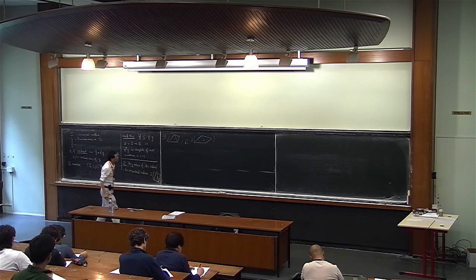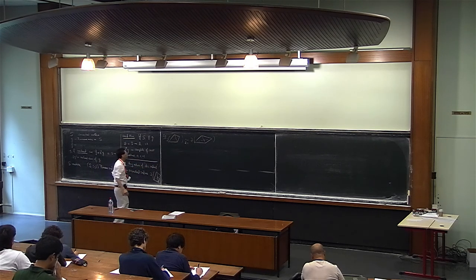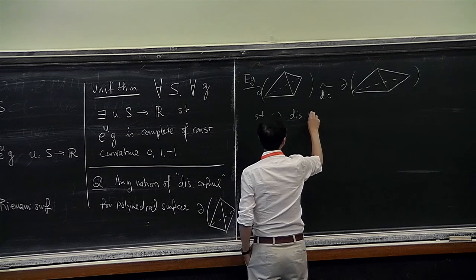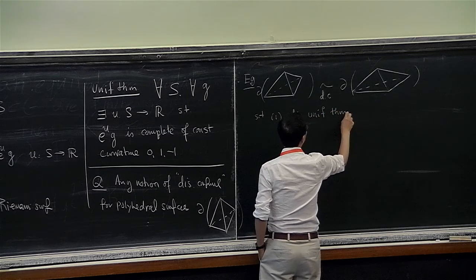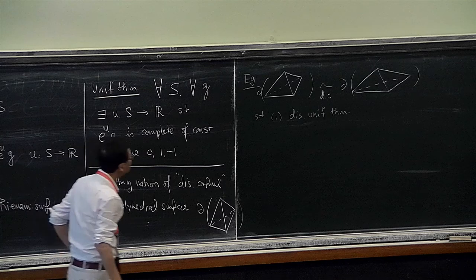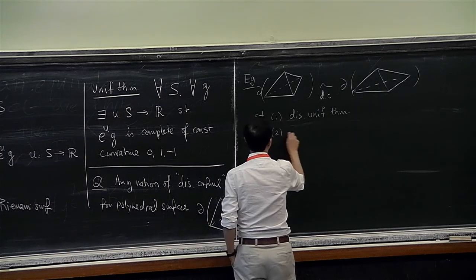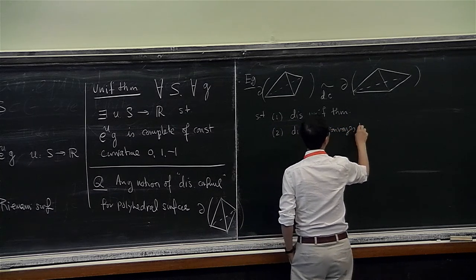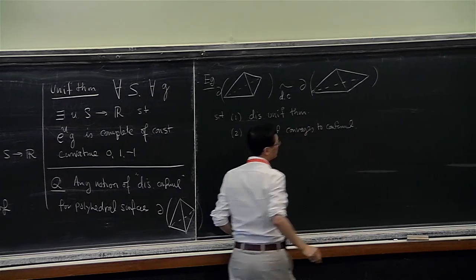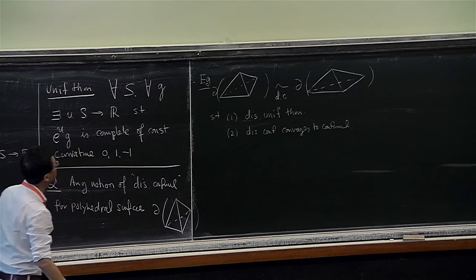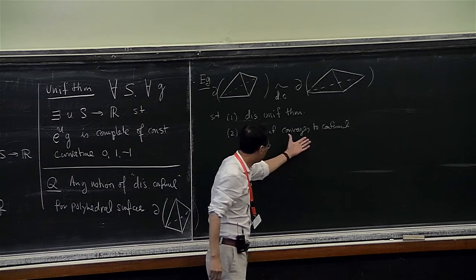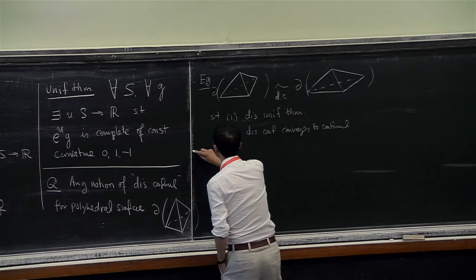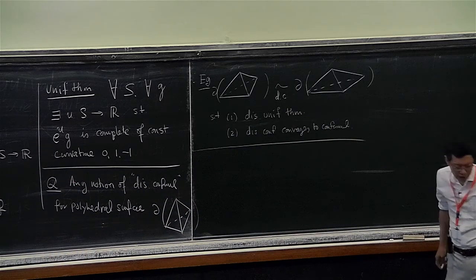We want such a notion so that two basic properties hold. First, there should be some kind of discrete uniformization theorem. Second, it should converge: discrete conformal should converge to conformal in the classical sense. If I produce sufficiently fine subdivisions, this discrete conformal theory should converge to the conformal case. I'm going to tell you some of this work — that's the goal of the lecture.